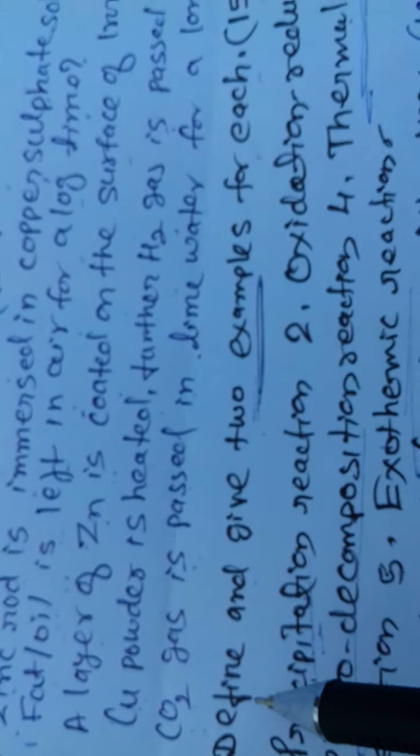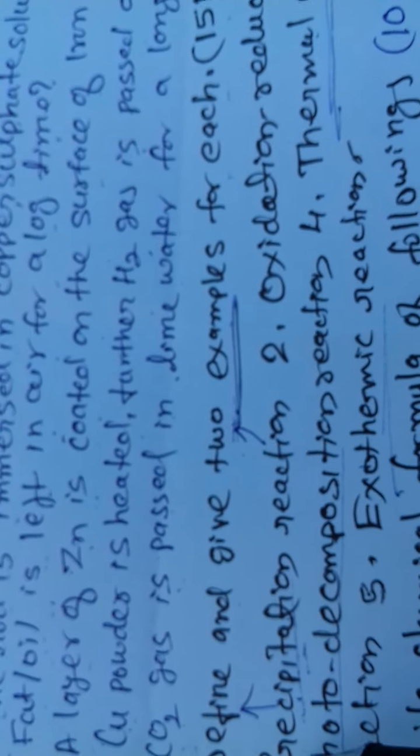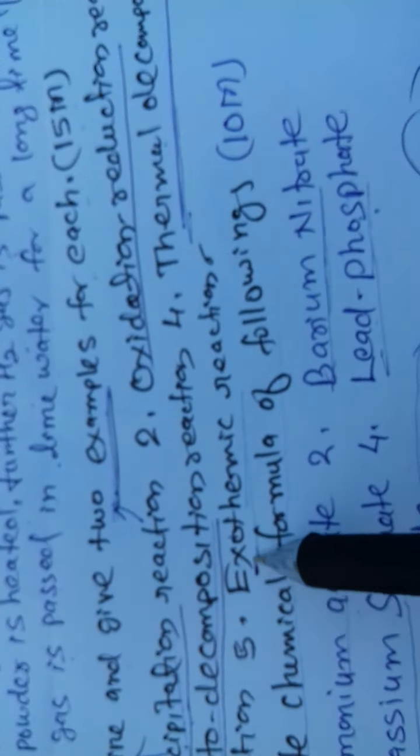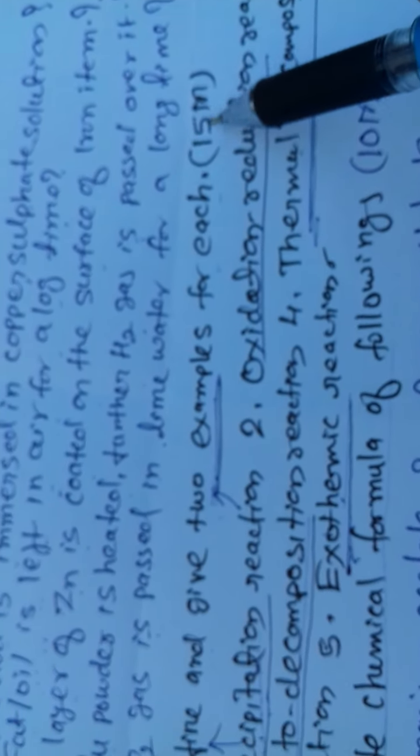It means one mark for definition and remaining two marks are for two examples, one example of one mark. Precipitation reaction, oxidation reduction reaction, photodecomposition reaction, fourth thermal decomposition reaction, and last is exothermic reaction. There are total five reactions and fifteen marks, three marks for one reaction with two examples.